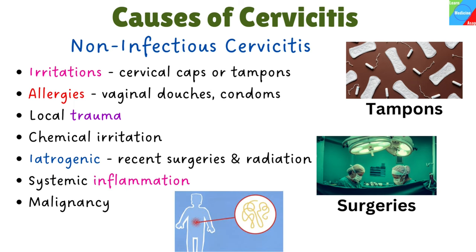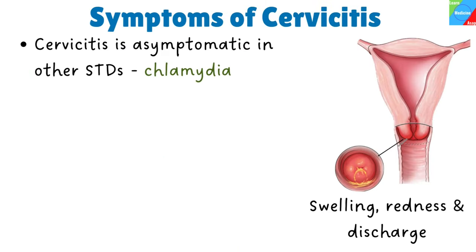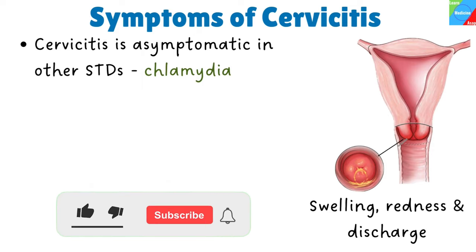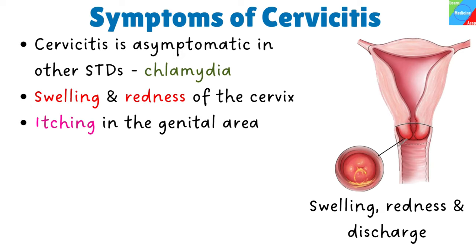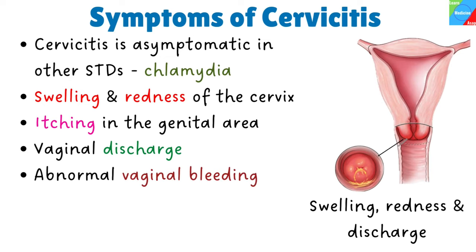Cervicitis is often asymptomatic in chlamydia, gonorrhea, and Trichomonas vaginalis infections because the symptoms of these diseases mask the symptoms of cervicitis. Cervicitis symptoms to watch for include swelling and redness of the cervix, itching in the genital area, and vaginal discharge that may be gray, white, or yellow and might have a foul-smelling odor.